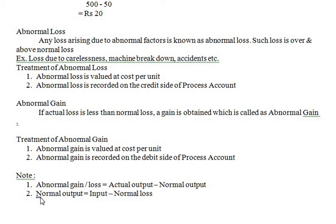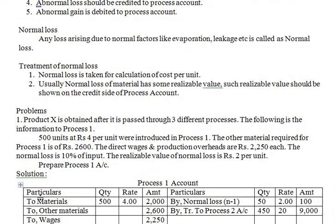Two important formulas: to find abnormal gain or loss, use actual output minus normal output. Normal output equals input minus normal loss. Today's problem was simple; in the next class we will solve 15-mark problems. Please go through the theory and the problem before the next class.